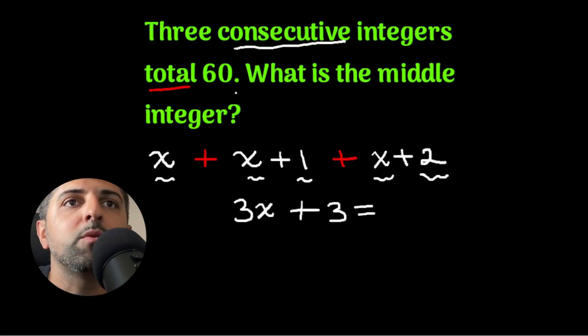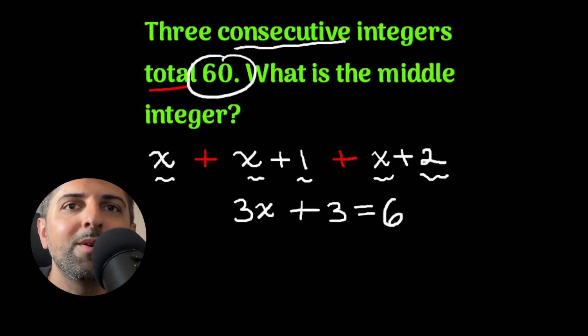And that is supposed to total 60. So 3x plus 3 equals 60. I've set up an algebraic equation.